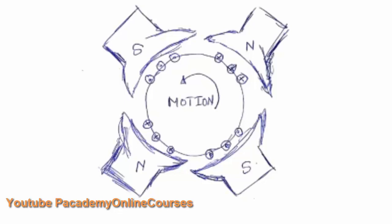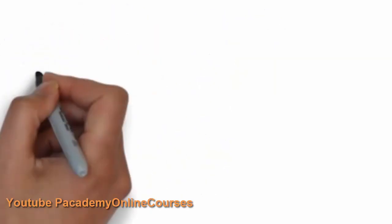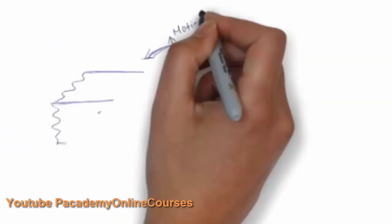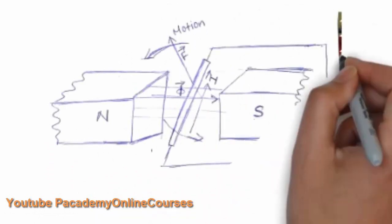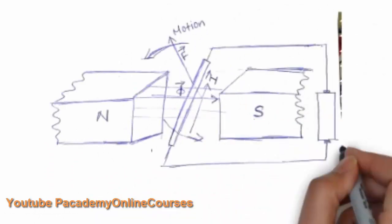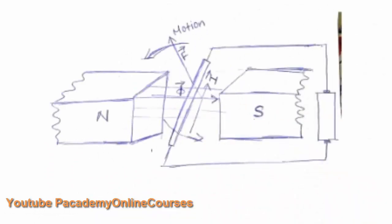The torque acting on each of the conductors will cause a motion in the anti-clockwise direction. In this diagram you can see the conductor and the direction of the current which is fed by a battery.